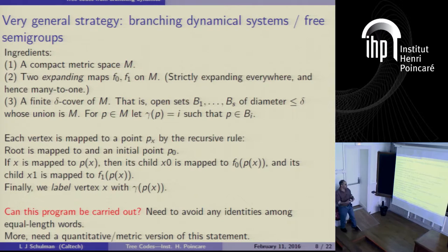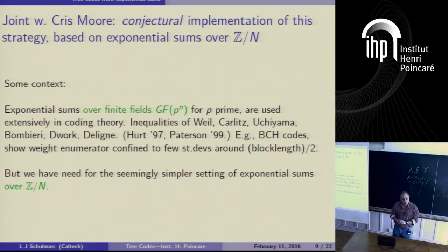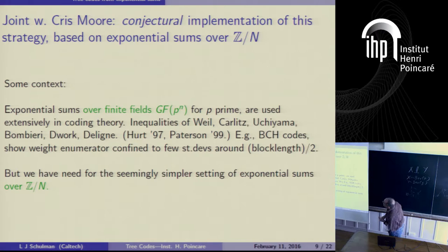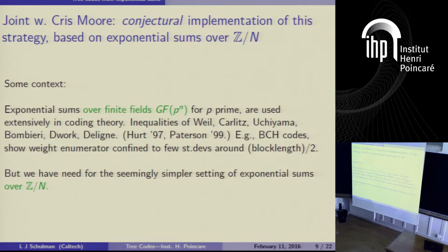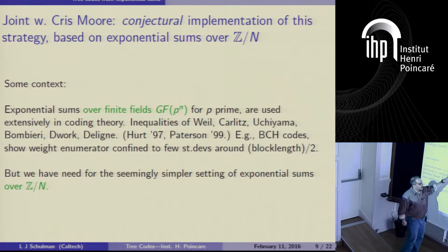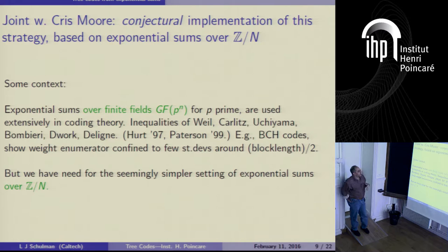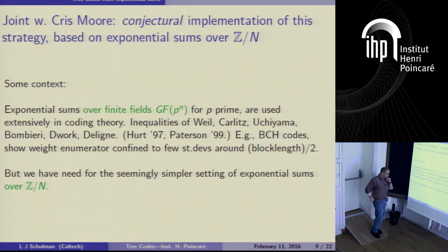That's the general framework from which we'd hope to derive these constructions. There's a particular suggestion that Chris Moore and I put forward a couple of years ago. It's based on exponential sums. Exponential sums are used classically in coding theory, usually in the context of finite fields for block codes — you're doing Fourier theory, writing codes over GF(q^n). But that's not what we're looking at here.